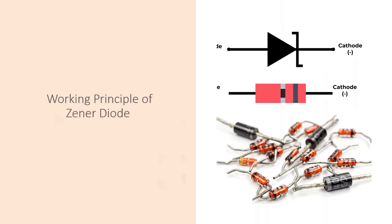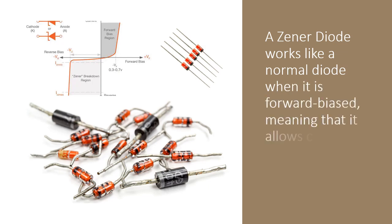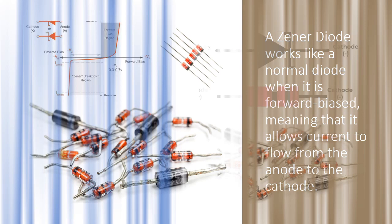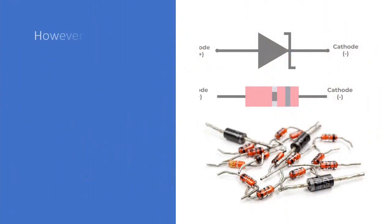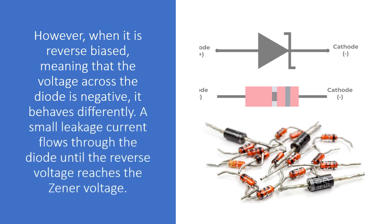A Zener diode works like a normal diode when it is forward biased, meaning that it allows current to flow from the anode to the cathode. However, when it is reverse biased, meaning that the voltage across the diode is negative, it behaves differently. A small leakage current flows through the diode until the reverse voltage reaches the Zener voltage.